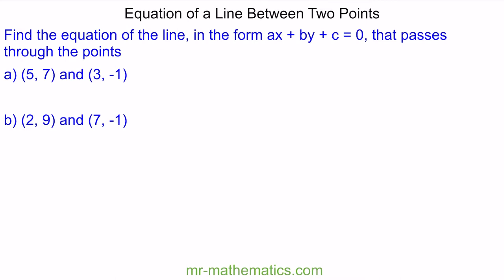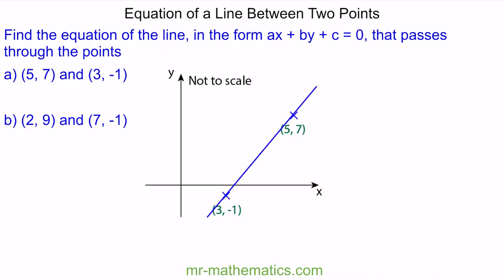The first thing that we do is draw a sketch of the two points and the line. Now we have the sketch, we can work out the gradient. The gradient we call m, and this is the change in y divided by the change in x. The change in y is the difference between the two y values — y minus y1 — this is the difference between 7 and negative 1, and it's divided by the difference in the two x values, x minus x1, or 5 minus 3.